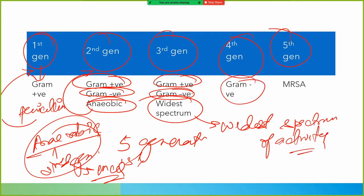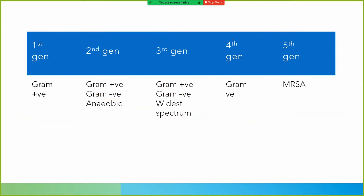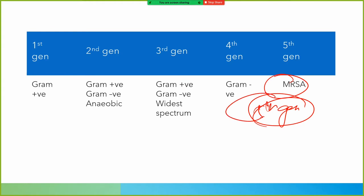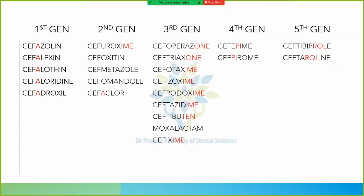The fourth generation is effective against gram-negative bacteria. The fifth generation is effective against MRSA — methicillin-resistant Staphylococcus aureus. Note that none of the other cell wall synthesis inhibitors are effective against MRSA. Only the fifth generation cephalosporins are effective against methicillin-resistant Staphylococcus aureus. Other beta-lactam antibiotics are not effective against MRSA.